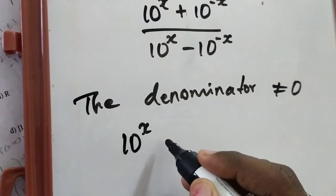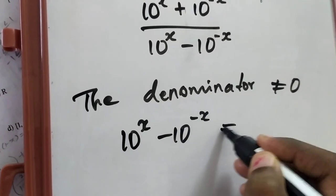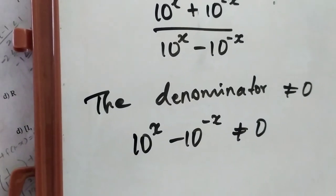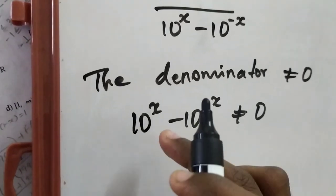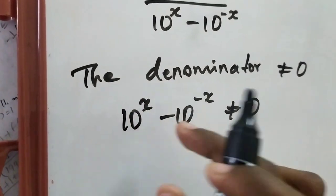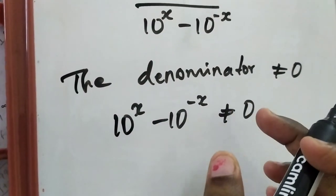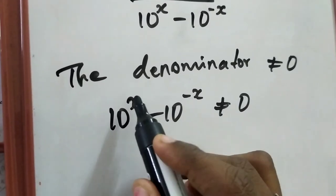Therefore, the denominator 10 power x minus 10 power minus x should not be equal to 0. Just imagine for what values of x it will be like 0.